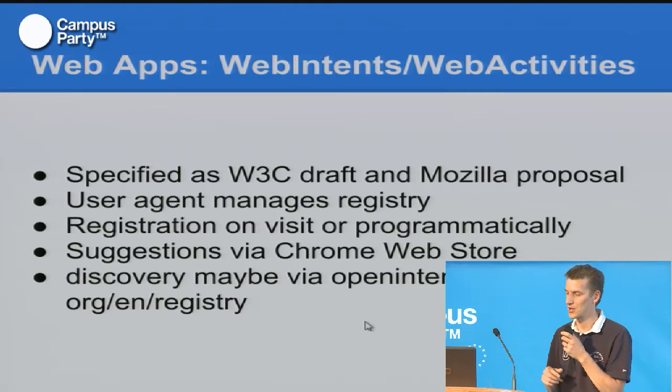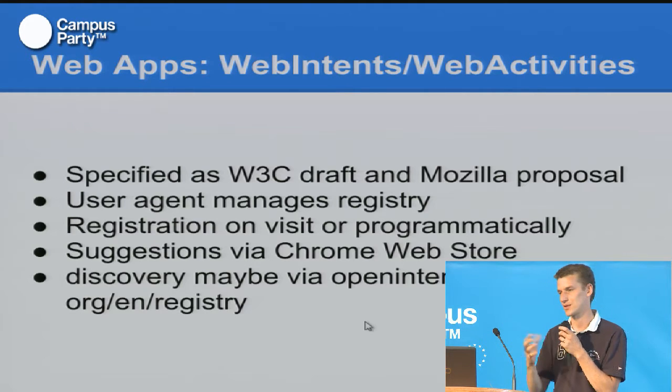In Chrome you also have support through the Chrome App Store, where they provide a selection of services that can do it for you. So you don't have to visit all the different services you're using — you also get them suggested by the app store. The Chrome Store helps you to discover more services, and we are also in discussion to do the same thing on openintents.org for web apps as we do for Android.